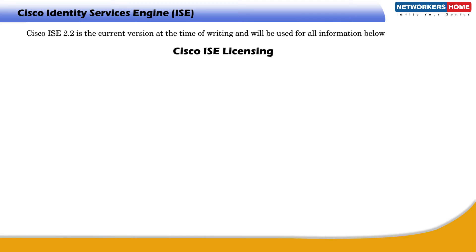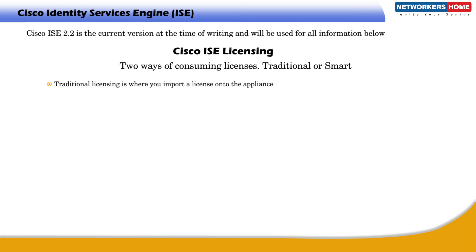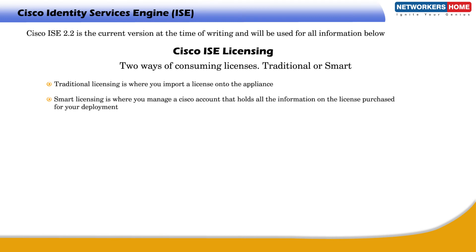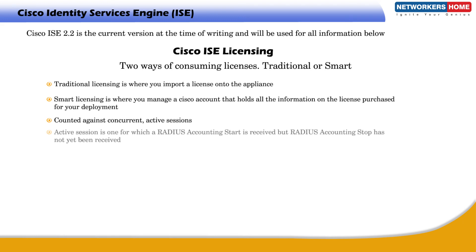The Cisco ISE licensing model allows you to purchase licenses based on your enterprise needs. There are two ways of consuming licenses: Traditional or Smart. Traditional licensing is where you import a license onto the appliance, and Smart licensing is where you manage a Cisco account that holds all information on the licenses purchased for your deployment. Licenses are counted against concurrent active sessions. An active session is one for which a RADIUS accounting start has been received but a RADIUS accounting stop has not been received.